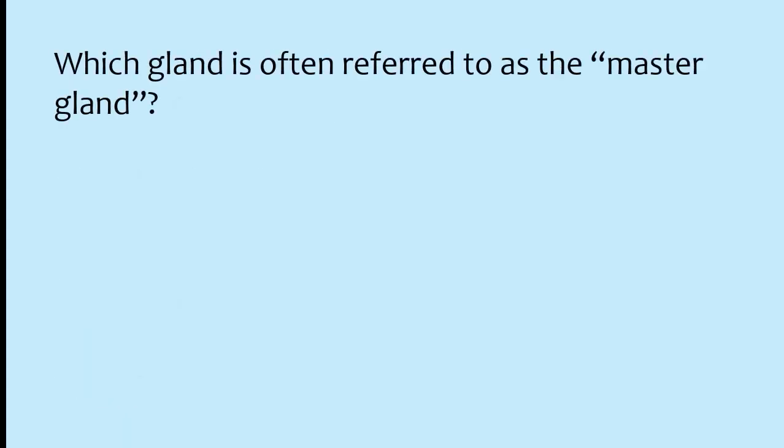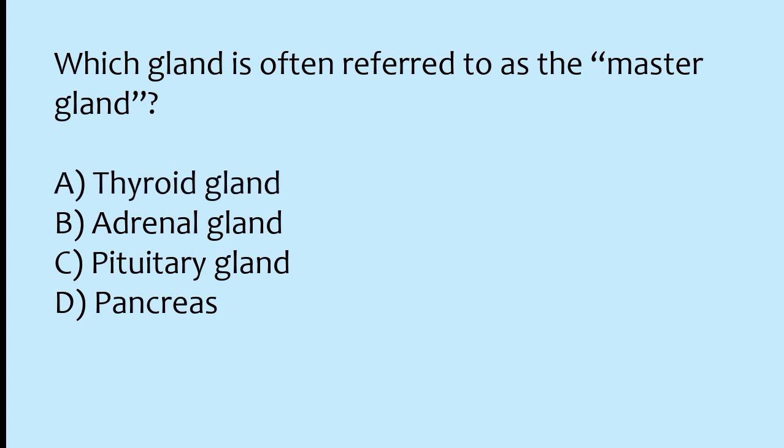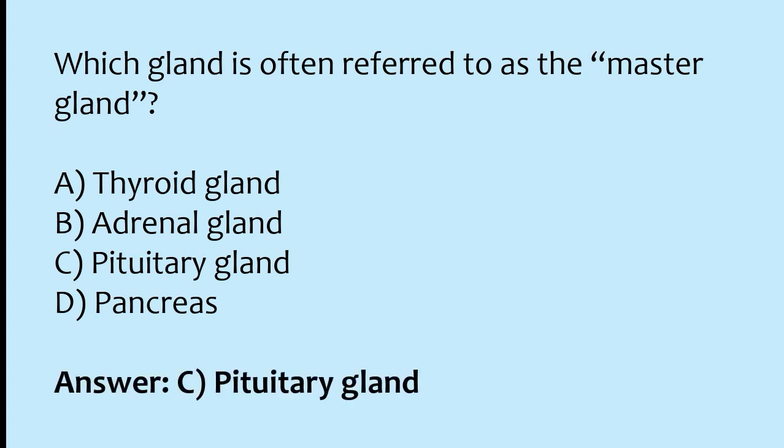Which gland is often referred to as the master gland? Options: thyroid gland, adrenal gland, pituitary gland, pancreas. The correct answer is option C: the pituitary gland is often referred to as the master gland.